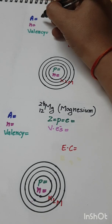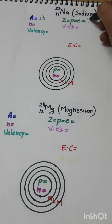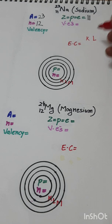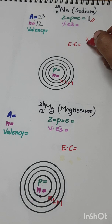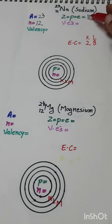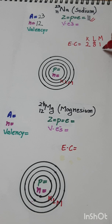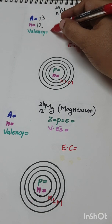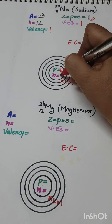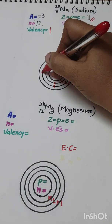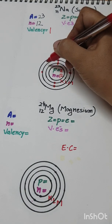Element sodium: A = 23, Z = 11, n = 23 − 11 = 12. For the electronic configuration — K shell: 2, L shell: 8 (maximum), leaving 1 electron for the M shell. So EC is 2, 8, 1. The outermost M shell has 1 valence electron, so valency = 1. Number of protons = 11, number of neutrons = 12.